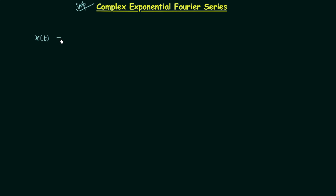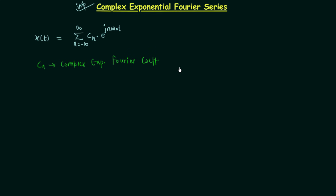Whenever you have a periodic signal x(t) and you want the complex exponential Fourier series expansion, you need to perform the summation from n equal to minus infinity to infinity of cn multiplied by e raised to power jn·ω₀t, where cn is the complex exponential Fourier coefficient. The coefficient cn is equal to 1 divided by T₀, integrated over T₀ of x(t) multiplied by e raised to power minus jn·ω₀t dt.